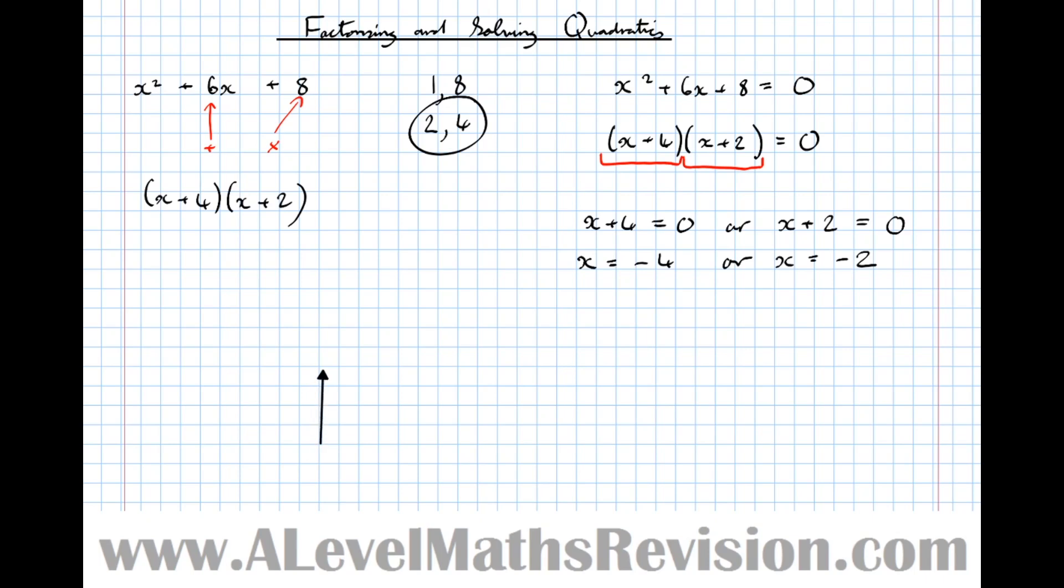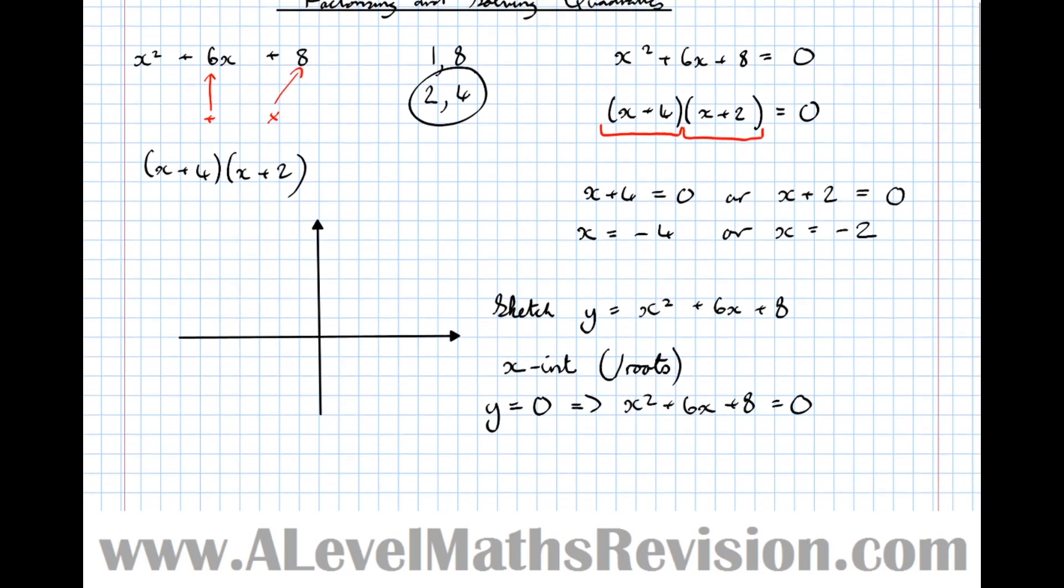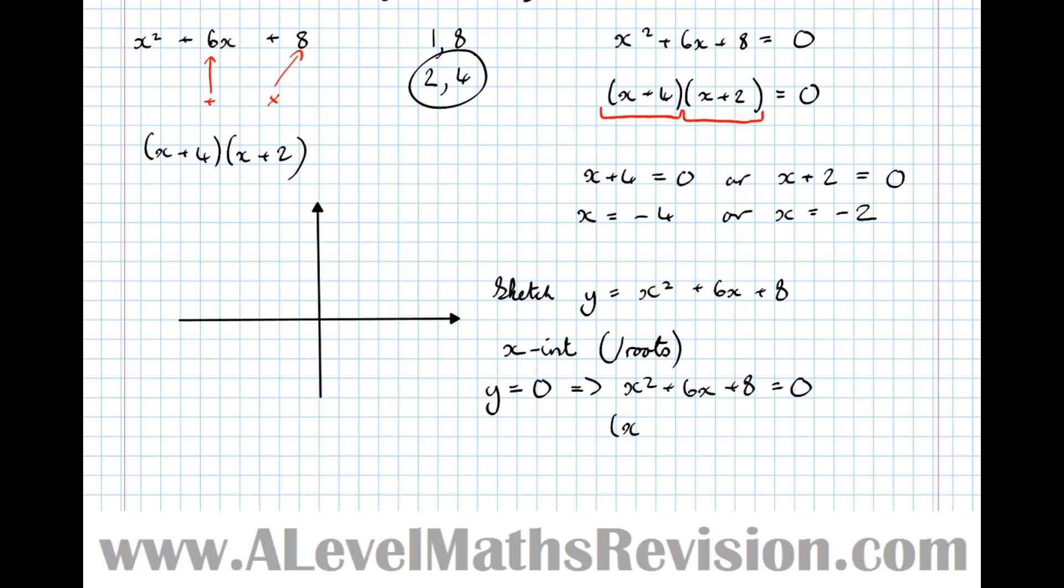So x = -4 or x = -2, and quadratic equations like this have two solutions. It's also quite common at the start of A level to be asked to sketch a graph given its equation. If we were asked to sketch y = x² + 6x + 8, first of all we need the x-intercepts or roots.